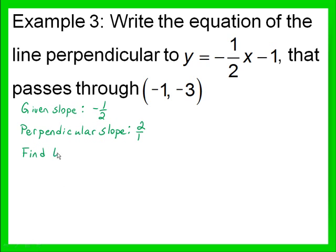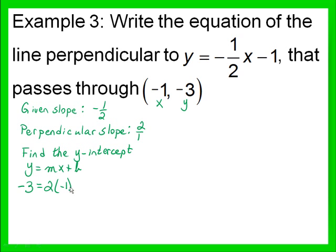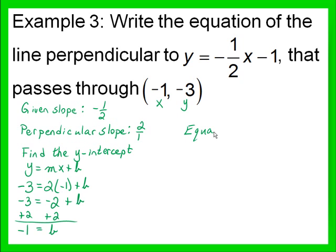Next, find the y-intercept. We use our format y equals mx plus b, and we plug in negative 1 for x and negative 3 for y. So negative 3 equals 2 times negative 1 plus b. Simplify on the right side: negative 3 equals negative 2 plus b. Add 2 to both sides, and negative 1 equals b. So our equation is y equals 2x minus 1.